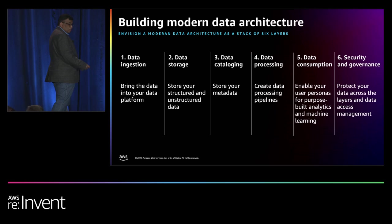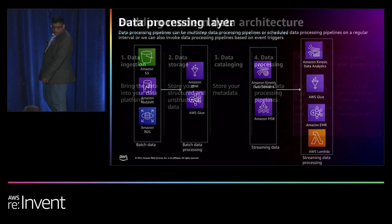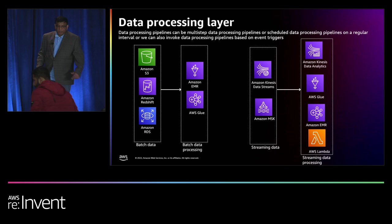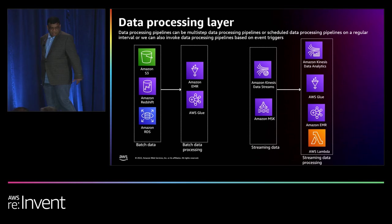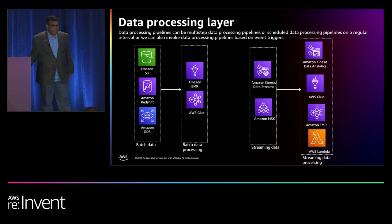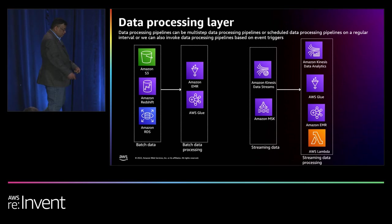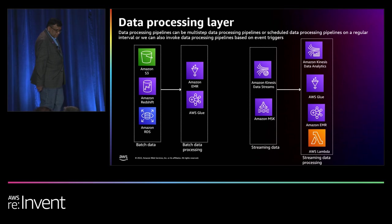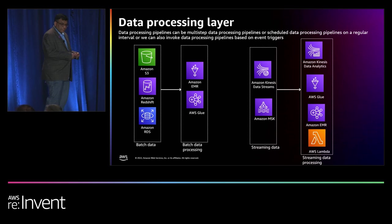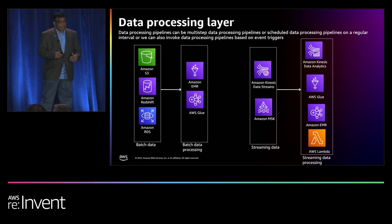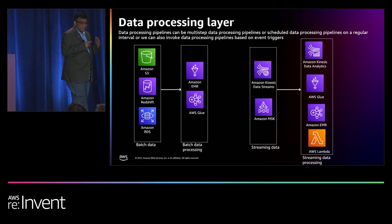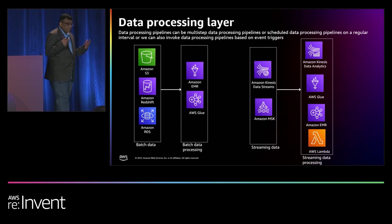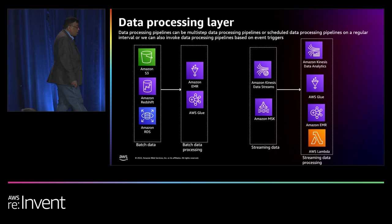Now let us zoom into the data processing layer. You can build multi-step batch data processing pipelines by using AWS Glue with AWS Step Functions that can catalog, transform, and enrich your data sets into raw, transformed, and curated data zones. Amazon EMR also provides another option to build batch data processing pipelines. You have multiple options to process your streaming data: Amazon Kinesis Data Analytics for stateful and complex data streaming processing; AWS Lambda is good for simple stateless streaming data processing; AWS Glue for near real-time streaming data processing; and Amazon EMR to use popular big data frameworks like Spark, Hadoop, etc.